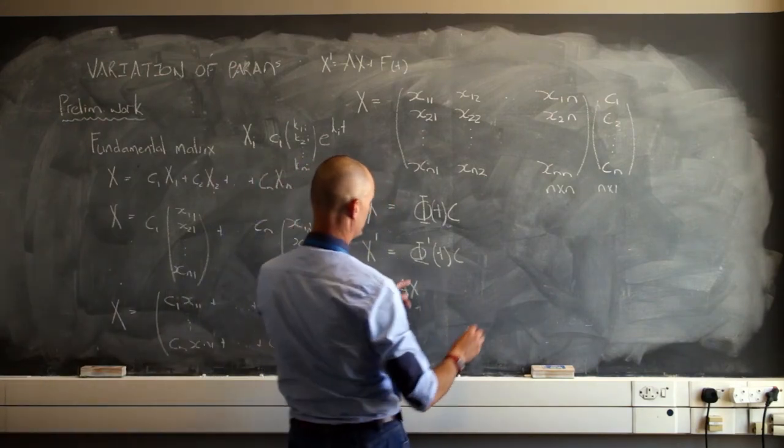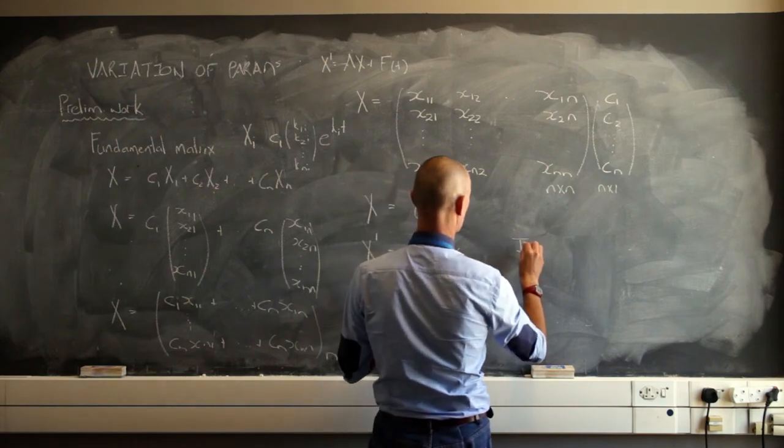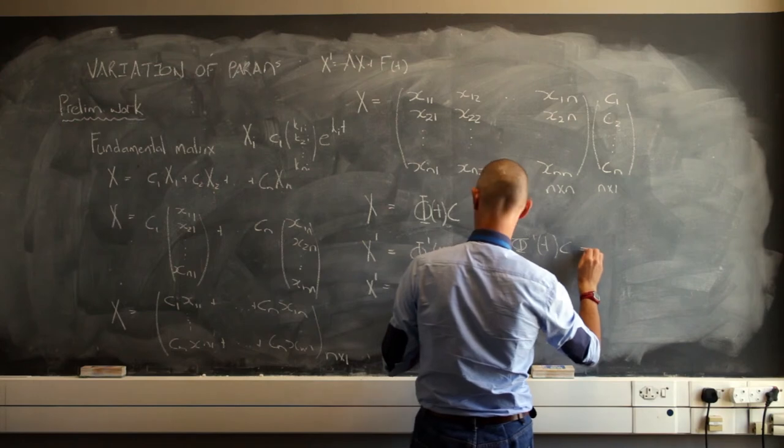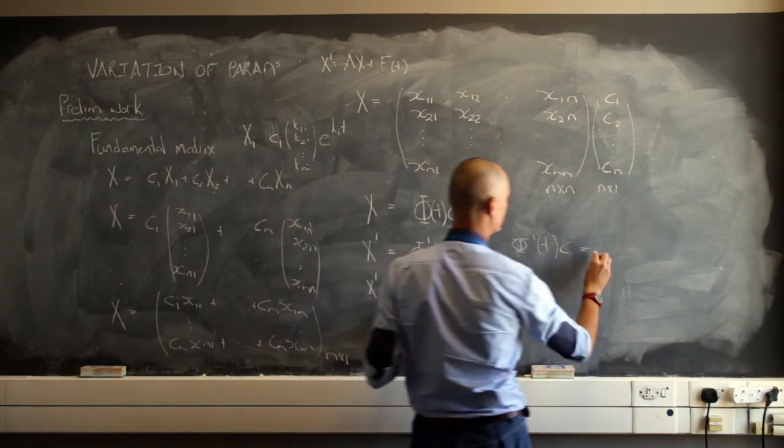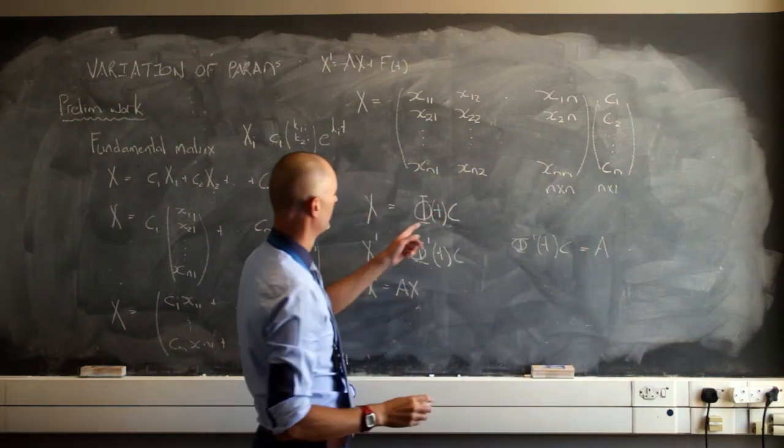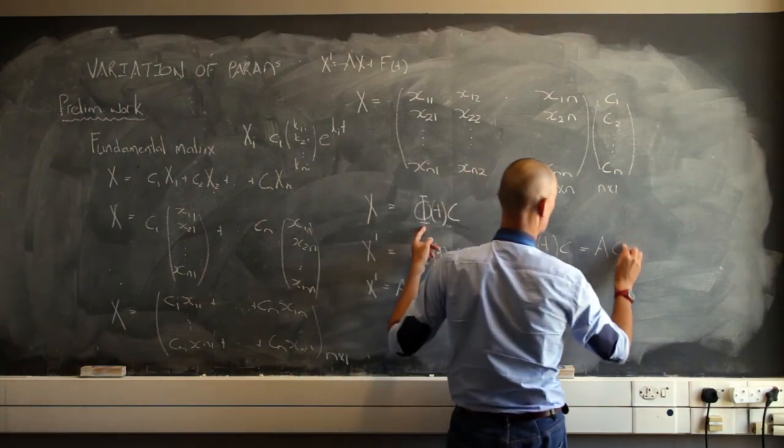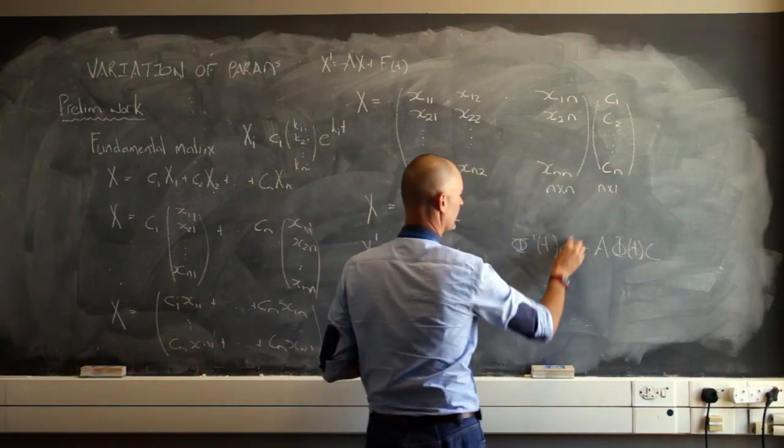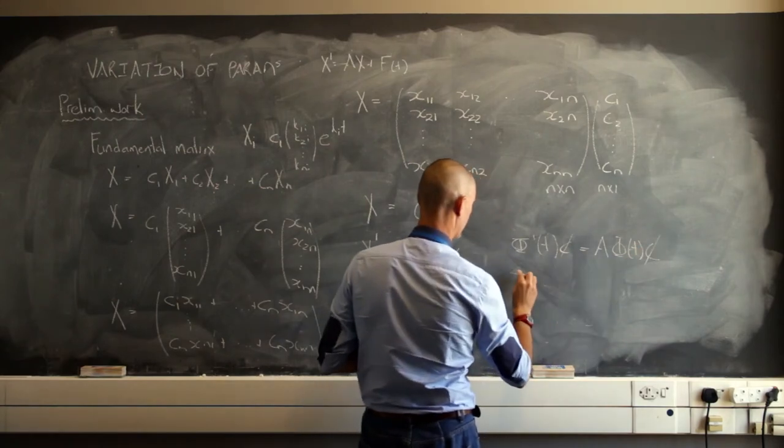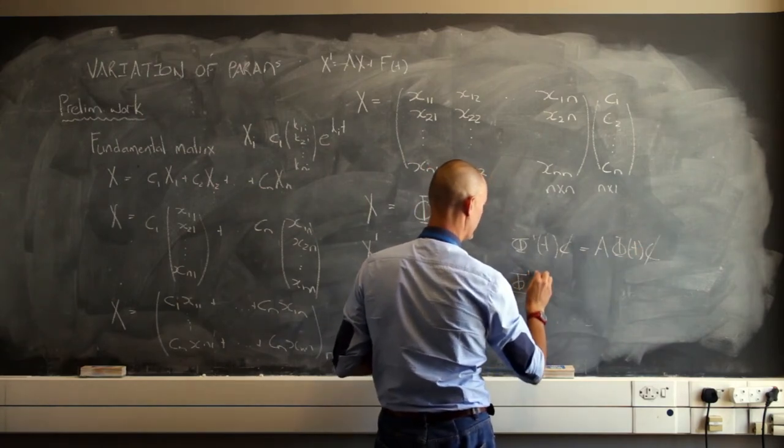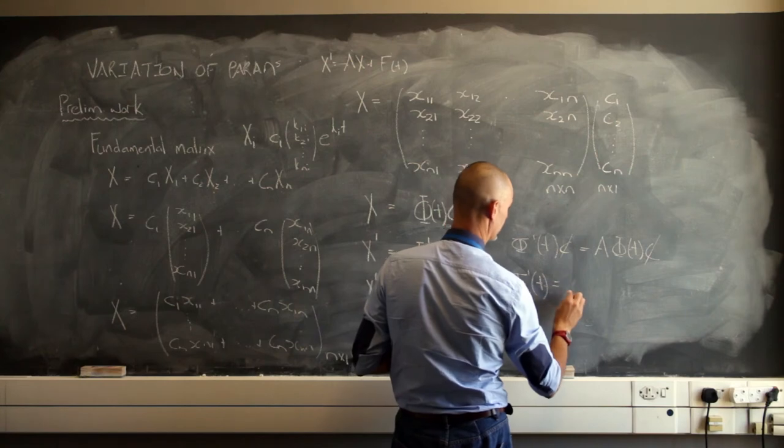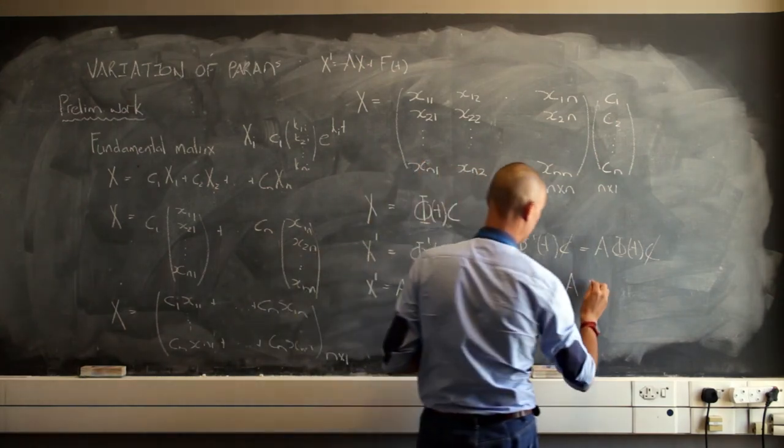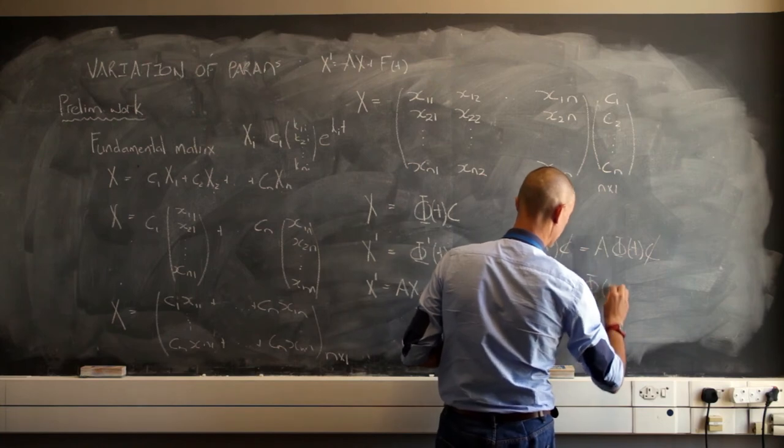Okay, that constant, this is the constant. So I can do that. But I remember that x prime equals ax. So I'm going to have something like this. These two are now related to each other, so phi prime of t times c equals a, and what is x? Well, x is just phi of t times c.